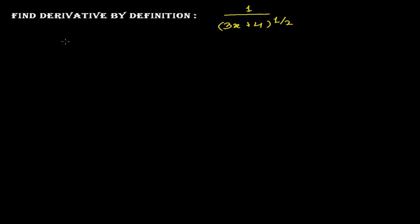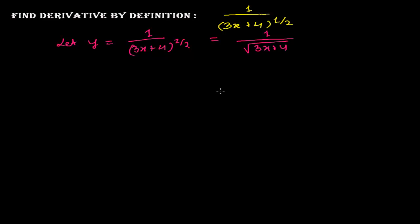I have to suppose a function — let y equal 1 over (3x + 4) to the power 1/2. I can write this as 1 over root of (3x + 4), because something to the power half means it is inside the square root.